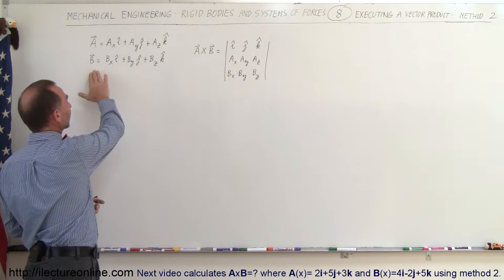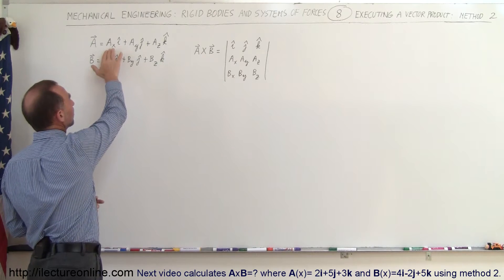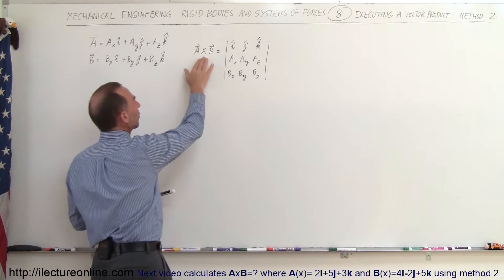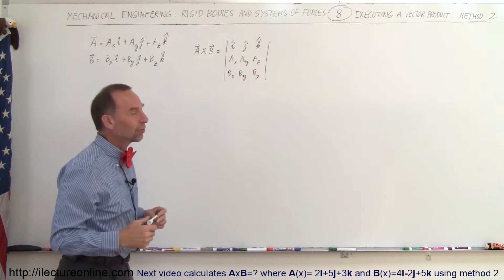So here again we have two vectors, vector A and vector B. Each vector has three components, the X, Y and Z components. When we do a vector product we have A cross B equals and we solve that matrix.